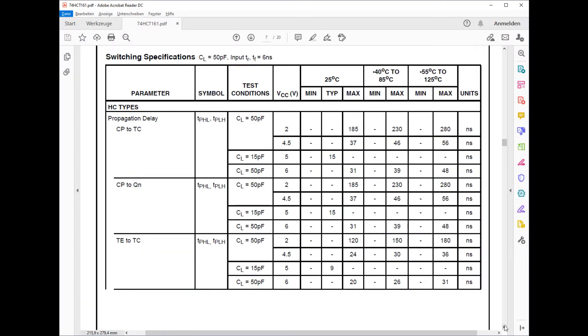So for phase A which is the step counter up, I look into the datasheet and find that the CP2QN, so from clock pulse to output, there is a number of times. And I pick the one that is for 4.5 volts and for 25 degrees. And it tells me I take about 37 nanoseconds.